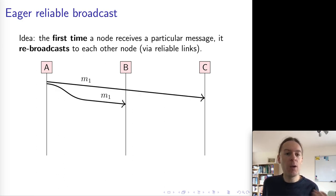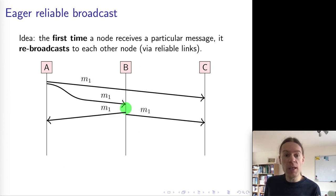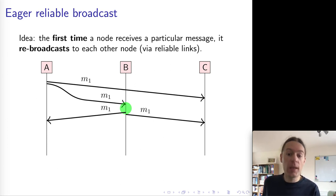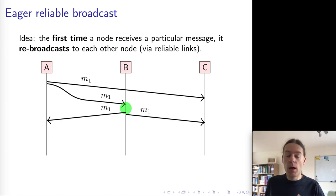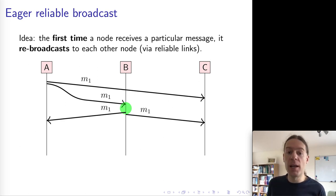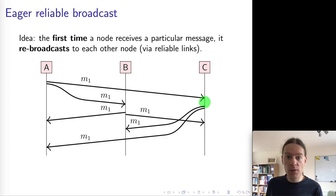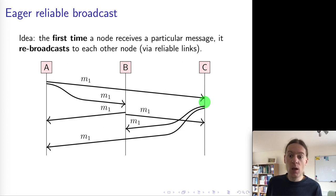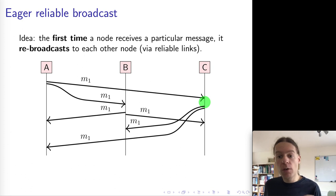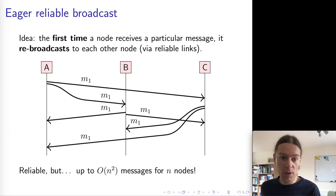So first of all, A wants to broadcast M1 to B and C. When B first receives M1, it rebroadcasts the same message again via point-to-point links to every other node. And so this way, even if A crashed, B will have further disseminated the message. And when C first receives the message, C will also rebroadcast the message to everyone else. This algorithm actually does ensure reliability — it ensures that even if nodes crash, all of the non-crashed nodes receive the message.